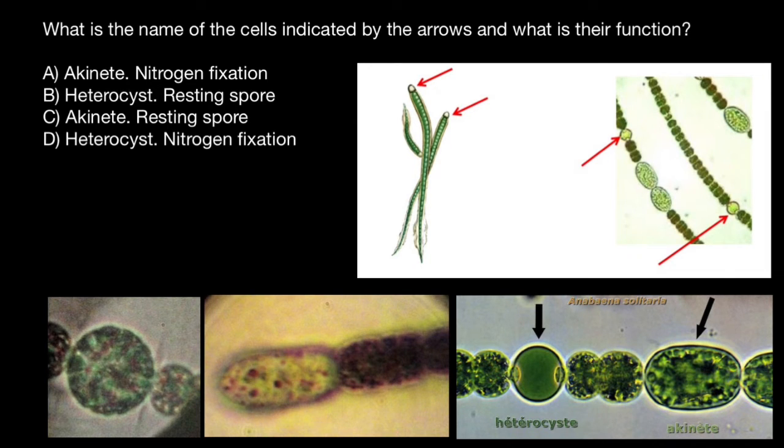As for the heterocyst or heterocytes, which are here, this is a specialized nitrogen-fixing cells formed during nitrogen starvation by some filamentous cyanobacteria. And both types of the cells can be present in the same string of cells.